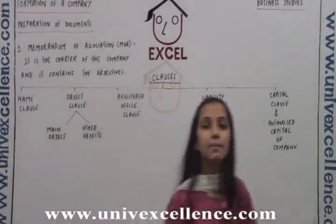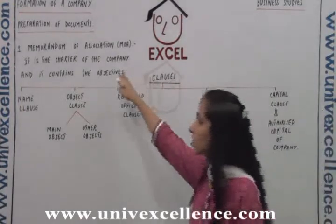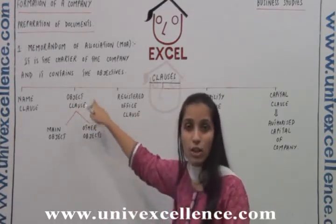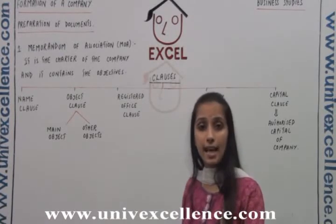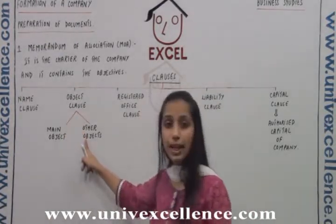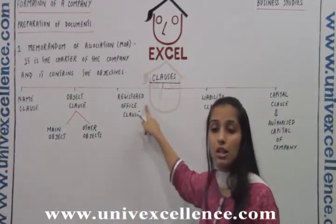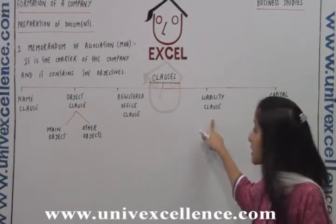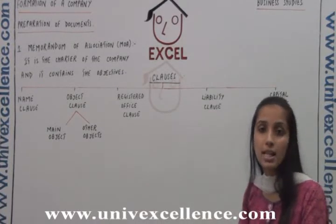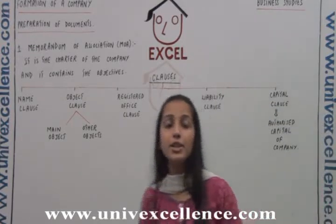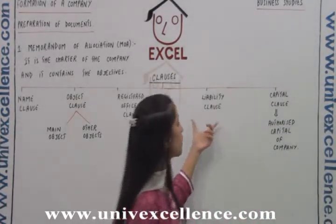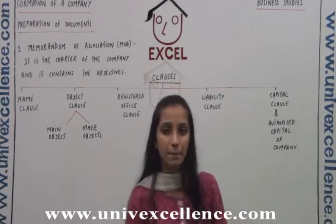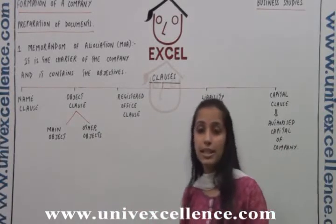These are the five clauses in the memorandum of association. It is the charter document. It contains: the name clause (name approved by ROC), the object clause (objectives of the company, with two sub-clauses: main object and other objects), the registered office clause (registered address), the liability clause (limited, unlimited, or guaranteed liability of members), and the capital clause (authorized capital of the company). This is the first document the promoter needs to prepare.